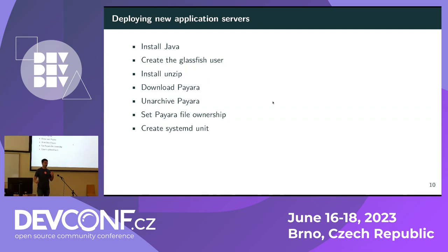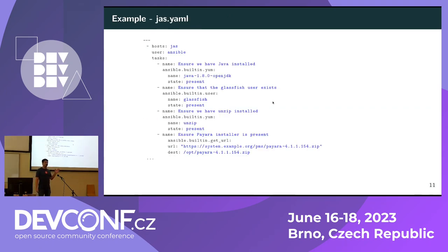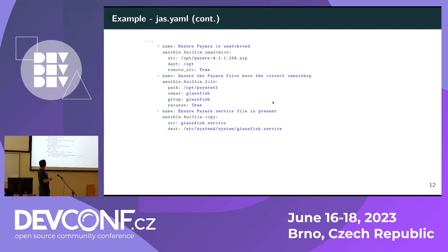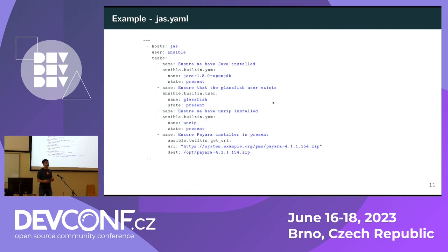That was the process for bare metal servers — for shared servers it was slightly different but the same idea. With Ansible you create a playbook, and as you can see with very little change in wording you can find the previous steps after the 'name' field: 'Ensure we have Java installed', 'Ensure that we have GlassFish user', 'Ensure we have unzip installed', 'Ensure Payara installer is present', and so on. The Ansible code and the process description are very similar — it has a module, some parameters, and if you read one or the other it kind of feels the same.